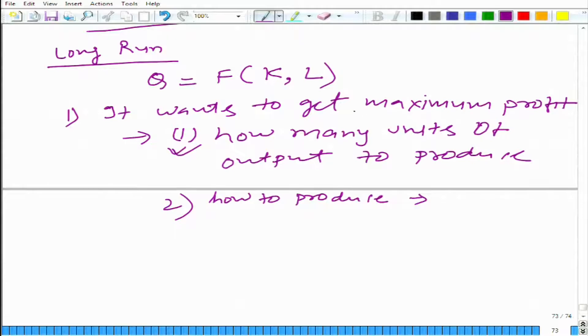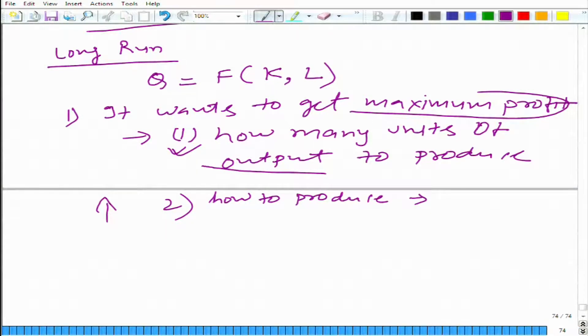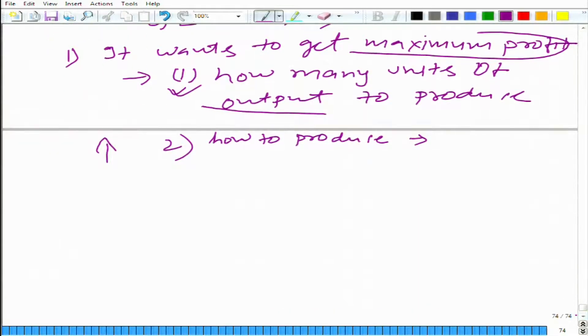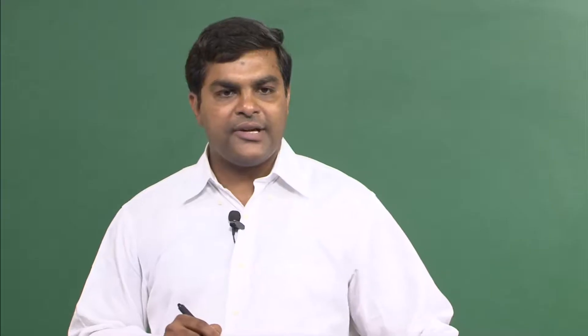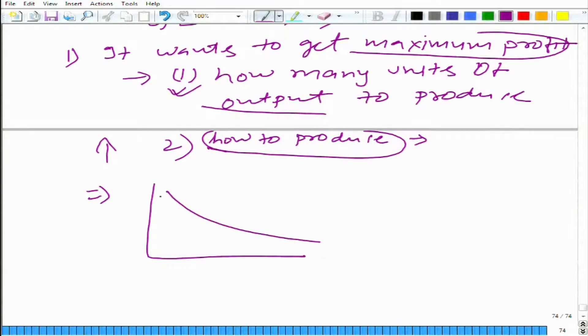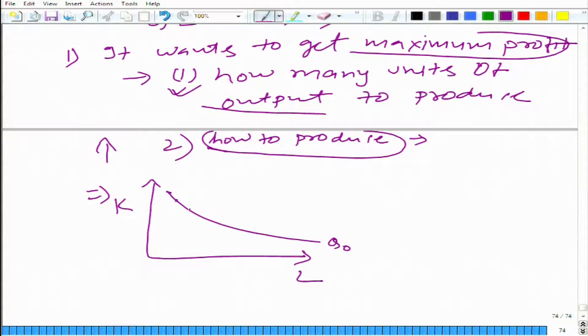Rather than talking about maximizing profit and how many units to produce, we are going in the backward direction, and there is a reason to it — it will become clear to you later. First we are talking about which particular combination of inputs the firm should select to produce a pre-decided amount of output. How would the company decide? Let us say this is the isoquant — here we have labor, here we have capital — which particular combination should it take? The one which costs minimum. The idea is to produce Q-naught amount of output, but different combinations of inputs can produce Q-naught, and different combinations would cost different. So the idea is to select a combination of inputs which is least costly.